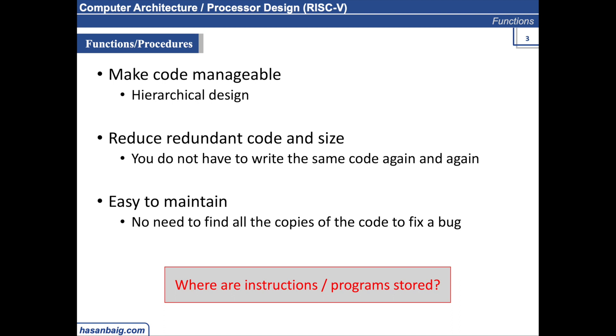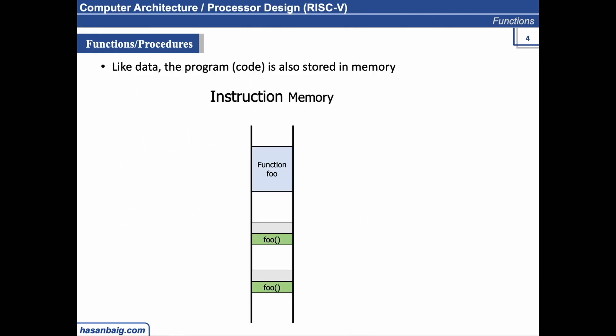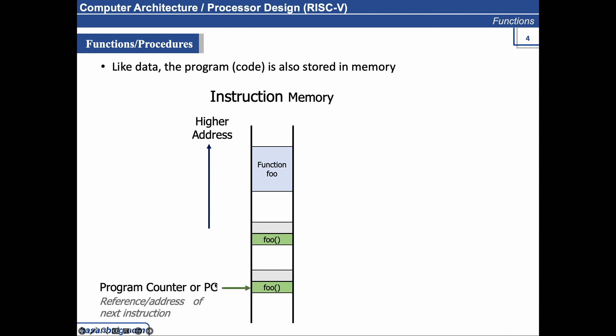Let's visualize this as an instruction memory where instructions are stored from bottom to top. In Python or C, we write code from top to bottom — line one, two, three, four. So assume that line one's instruction is stored at the bottom, line two above it, and so on. Another important concept you will use very frequently is the program counter, or PC. The program counter holds the address of the next instruction to be executed — this is very important and you will see it frequently when we discuss hardware.